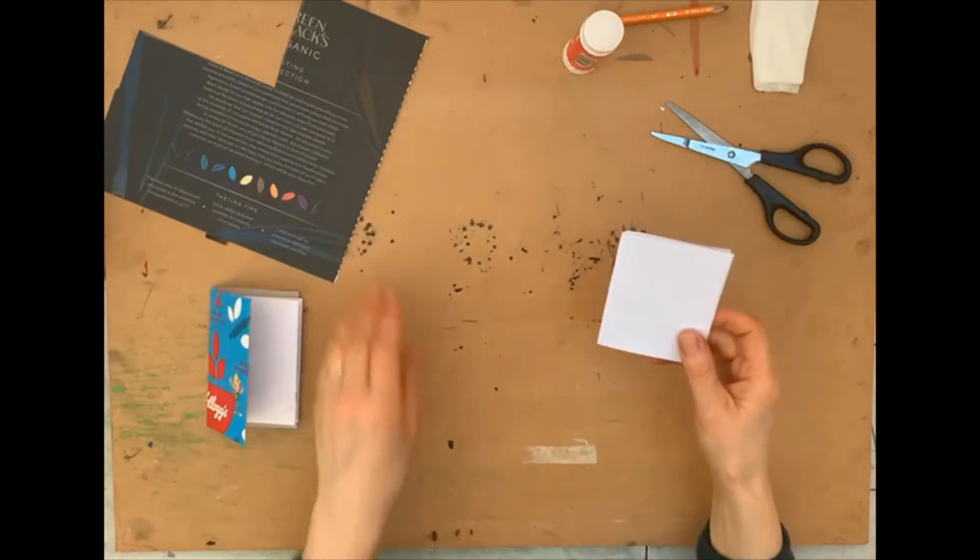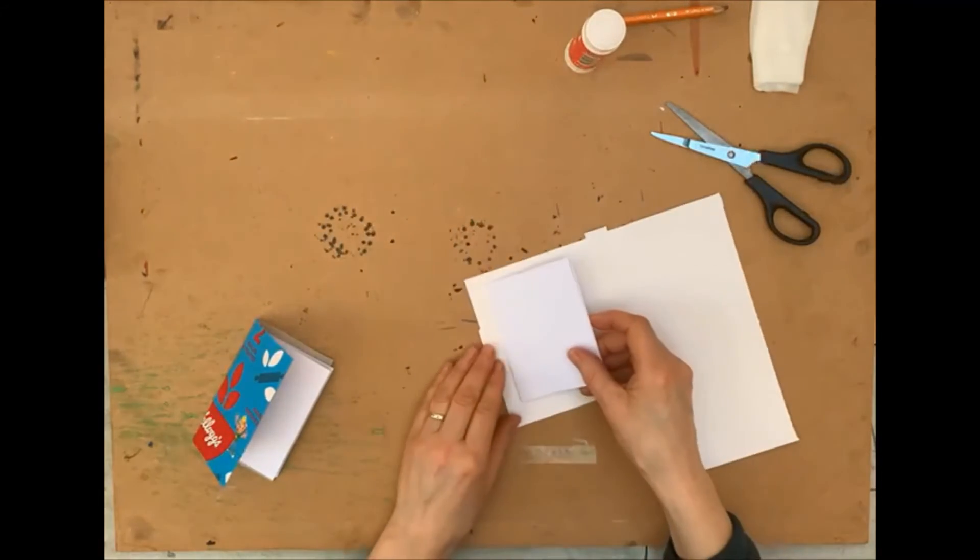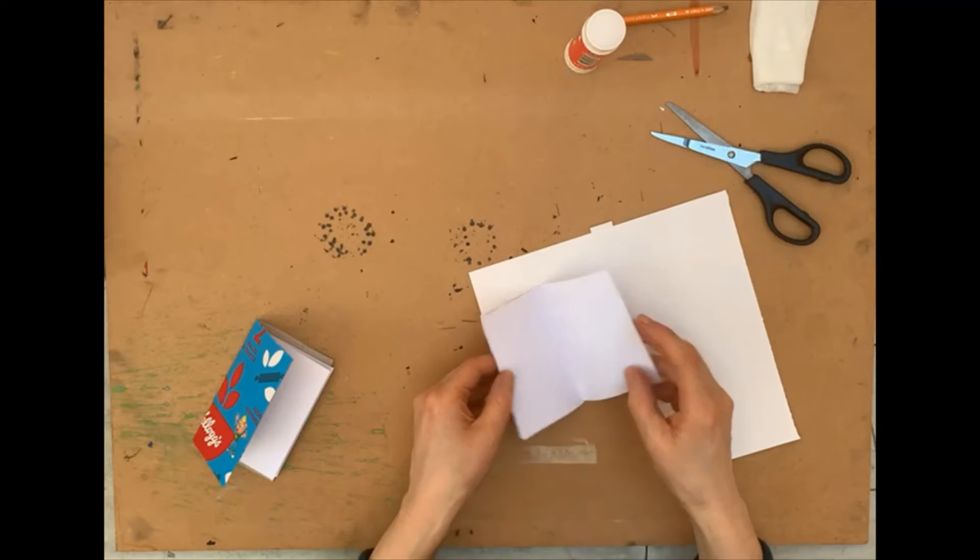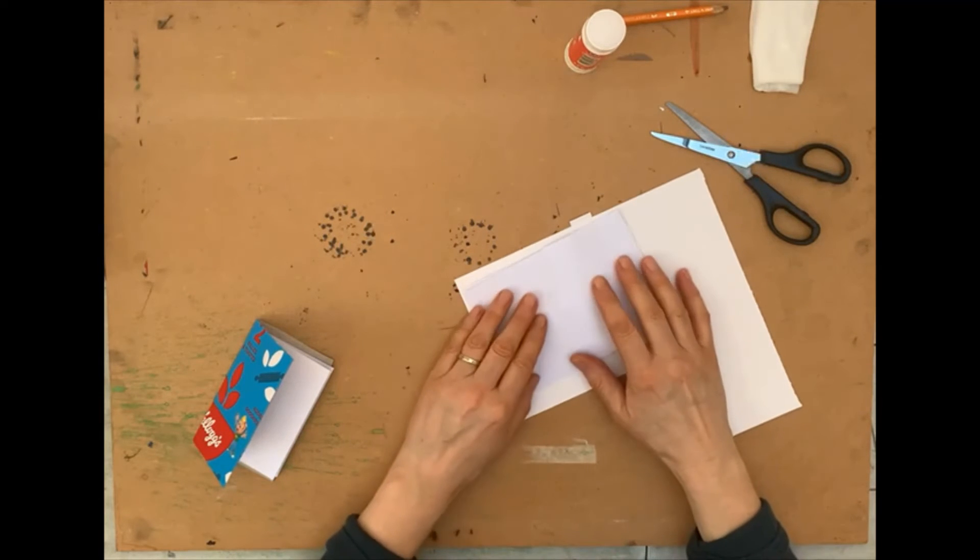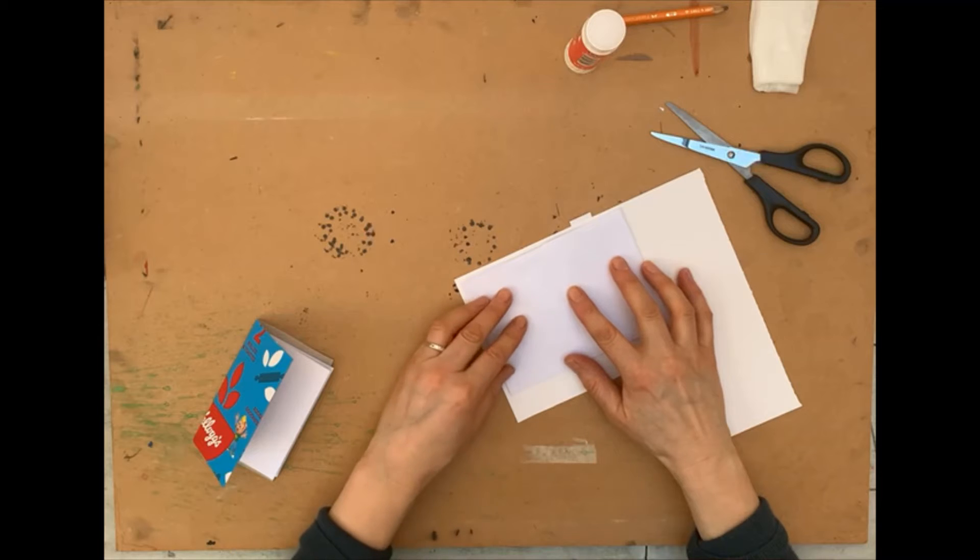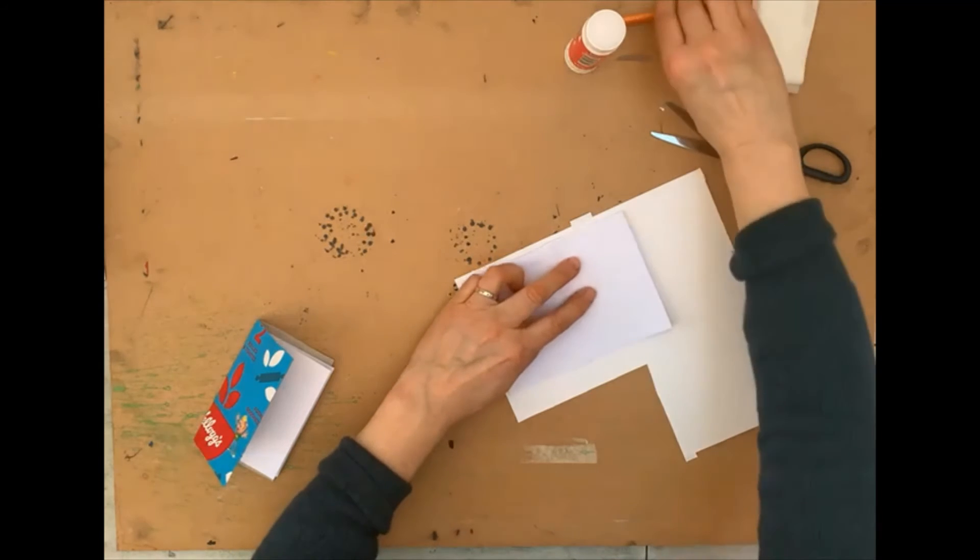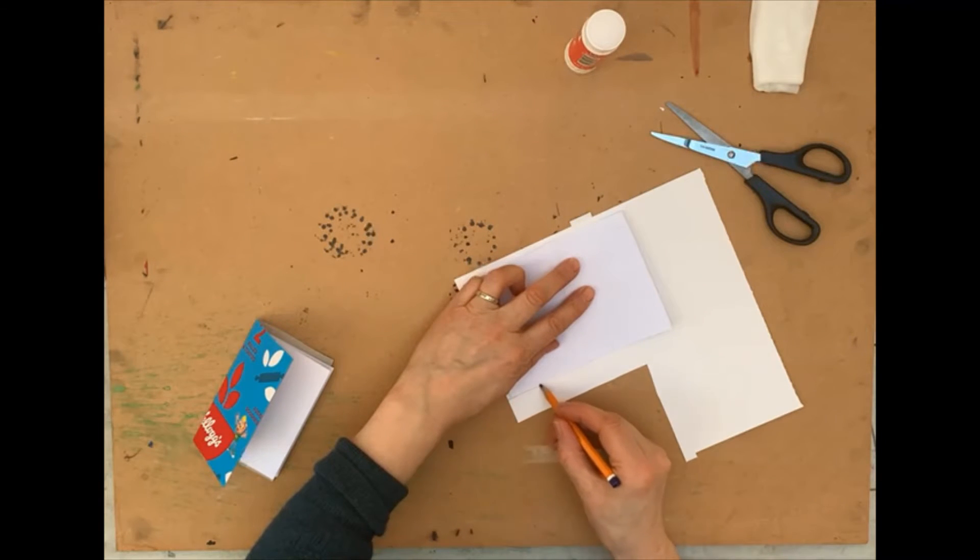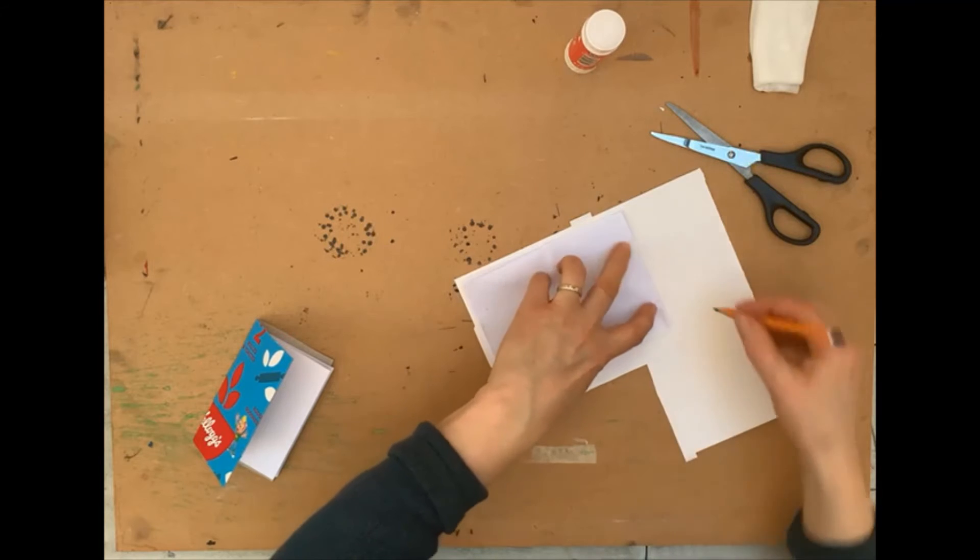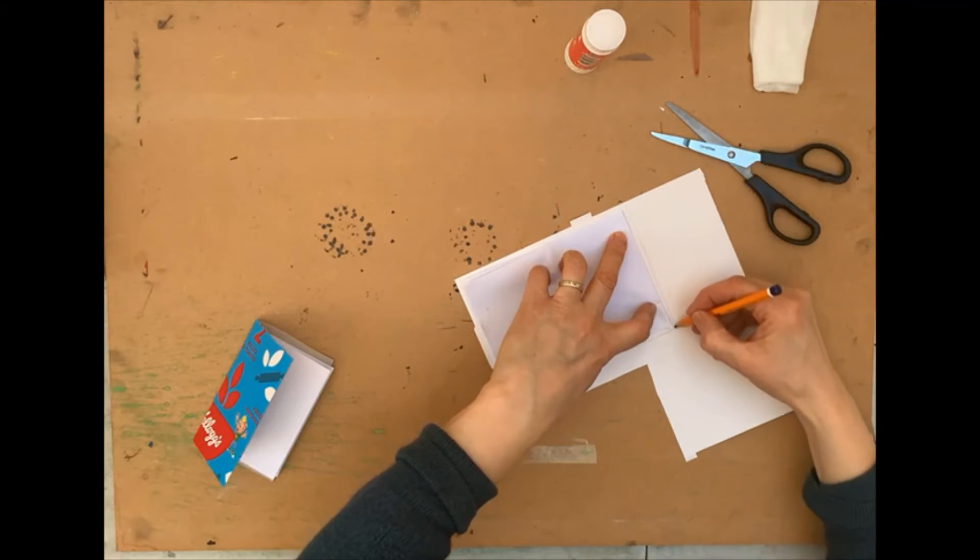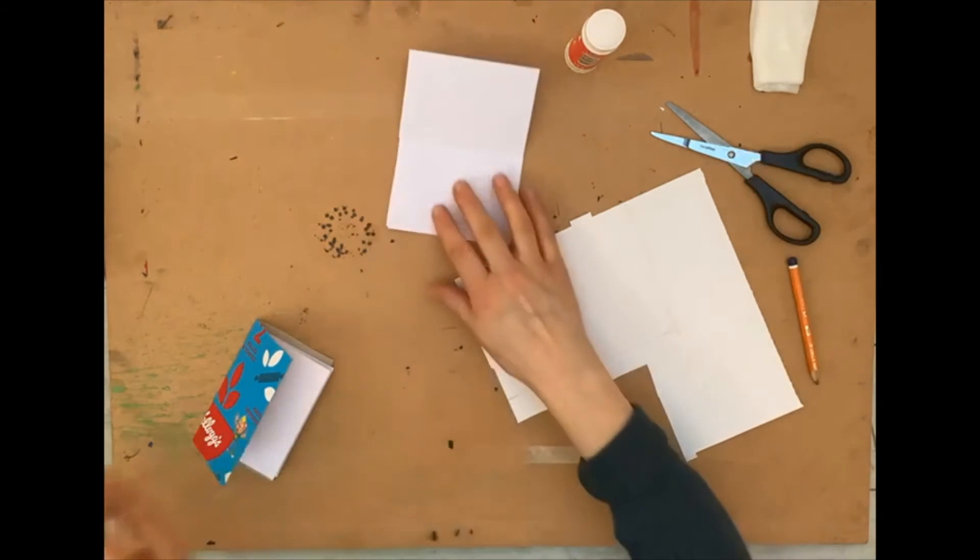So now you need to cover. Open up your pages and then just leave the tiniest margin all around. Straighten it up with your ruler.